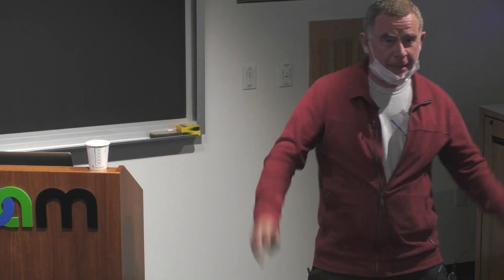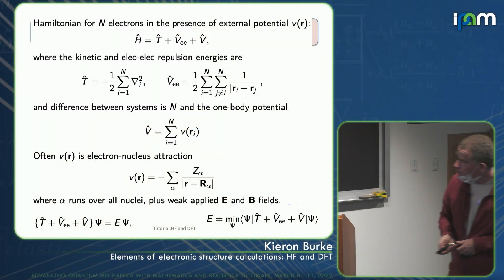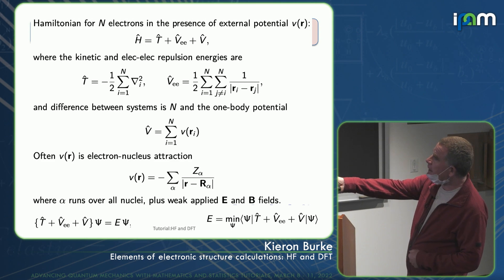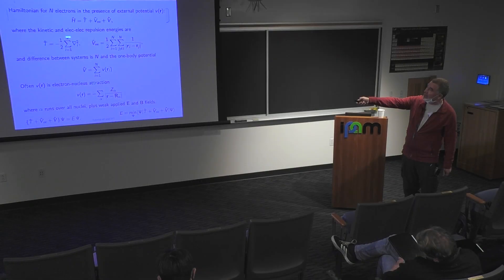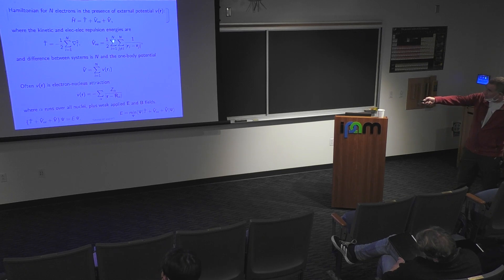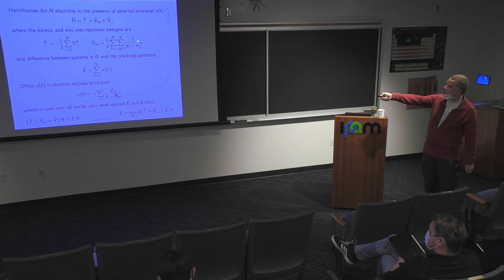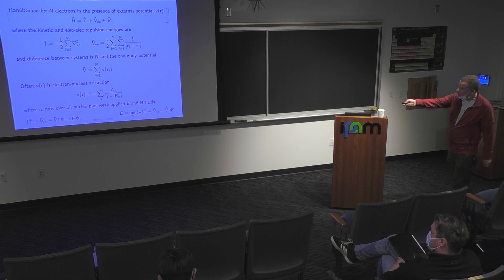So this first principles idea: we want to take the rules of quantum mechanics and apply them, starting from the actual Hamiltonian of these electrons. It consists of a kinetic energy piece — I'm going to use atomic units throughout — the electron-electron repulsion, and what we call the one-body piece. If we have N electrons, there are N del-squareds. The electrons repel each other with a Coulomb repulsion, summed over pairs, with a factor of one-half to avoid double counting. The only difference between all the different systems is this one-body potential.